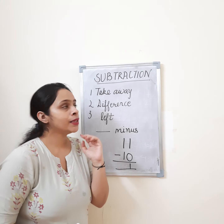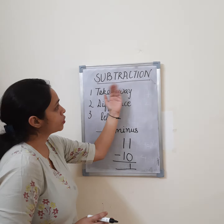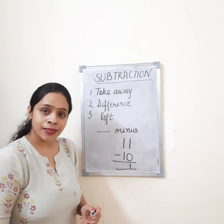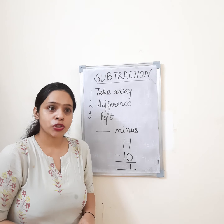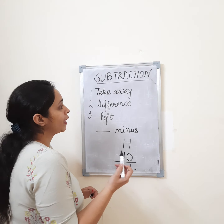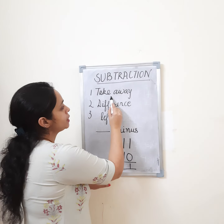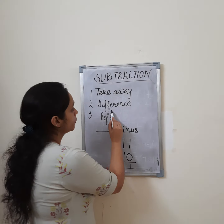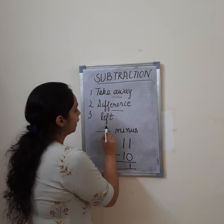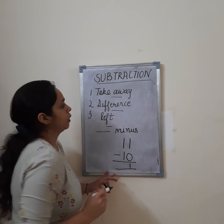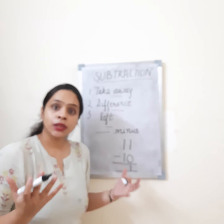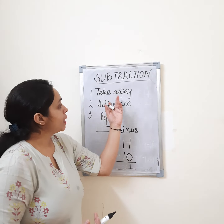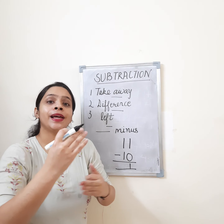What do we call this? Subtraction. Subtraction is what we do in any statement when things are reduced. So, how many words tell us it's subtraction? Take away, difference, and left. Left means how many things are remaining, and take away means something has been taken from you.